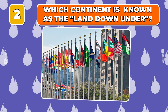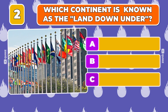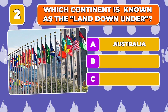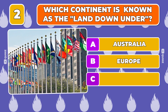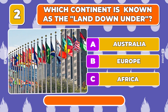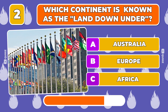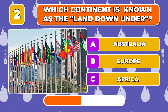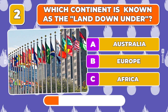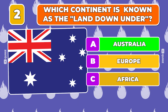Question 2. Which continent is known as the land down under? Australia, Europe, Africa. The correct answer is Australia.